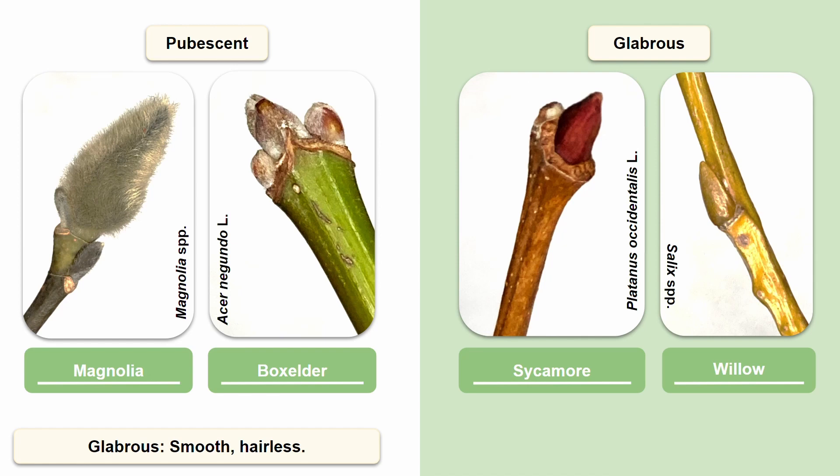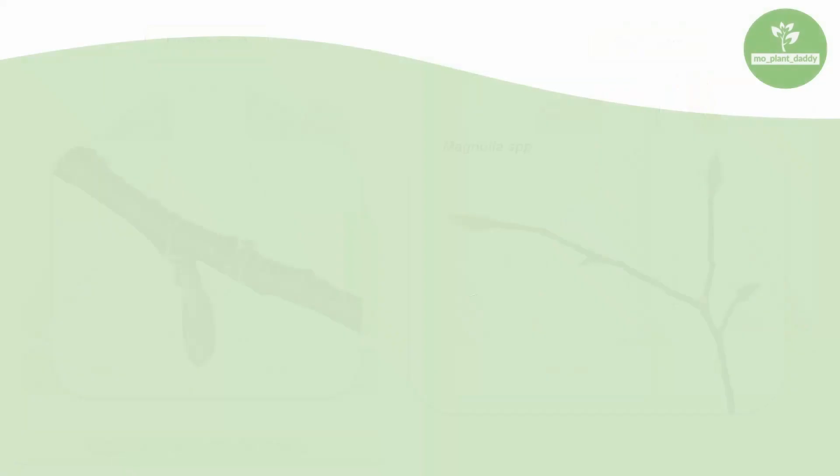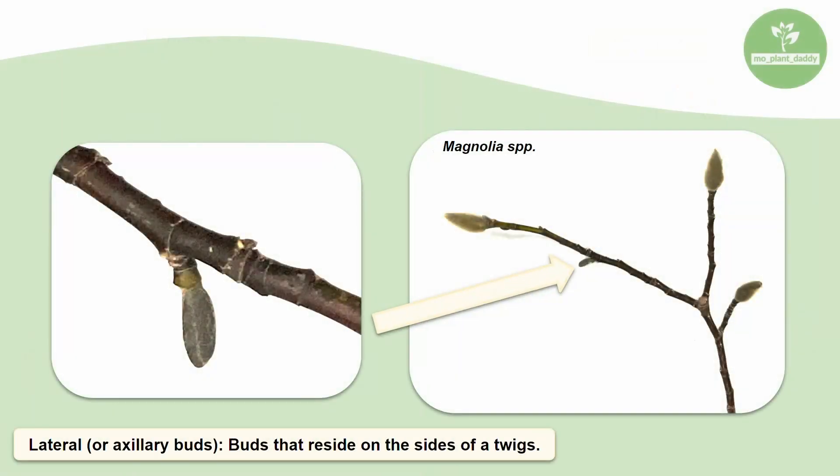Now I just mentioned a lateral bud, but that is a term that we haven't gone over yet. Lateral, or auxiliary, buds are buds that reside on the sides of a twig. On a magnolia twig, the lateral buds are not as large or as pubescent as the terminal buds. In many tree species, there are significant differences between apical and lateral buds.